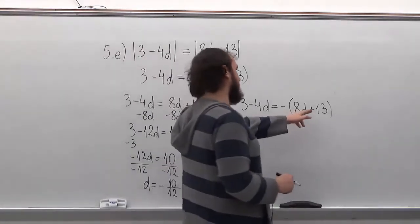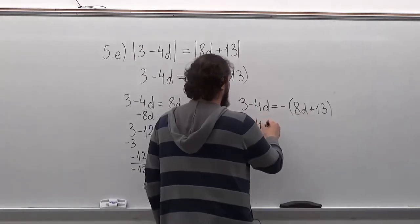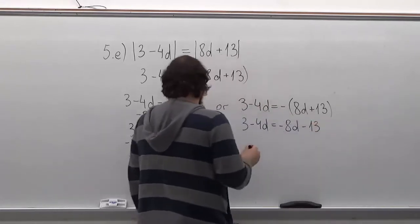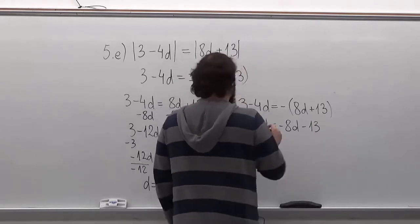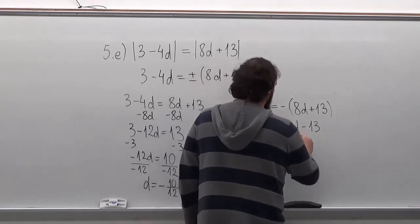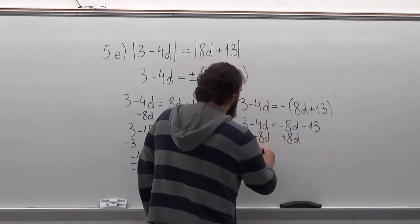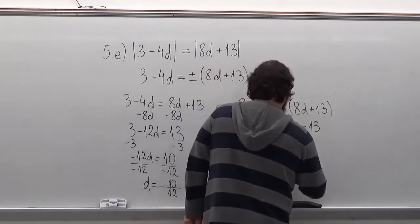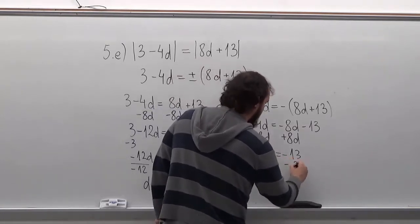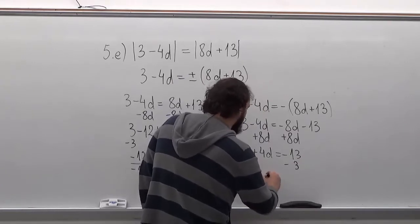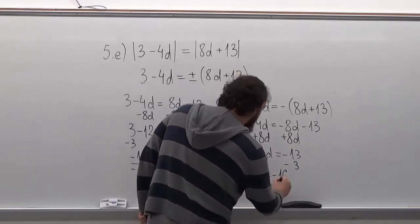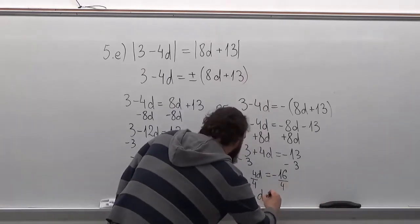Now for this side, first thing we want to do is open up the parenthesis, giving us minus 8d minus 13. Then we'll do pretty much the same thing — first we add 8d to both sides. We'll have 3 plus 4d equals minus 13. Now we'll subtract 3 from both sides — we'll have 4d equals minus 16. And now we'll divide both sides by 4. So D equals minus 4.